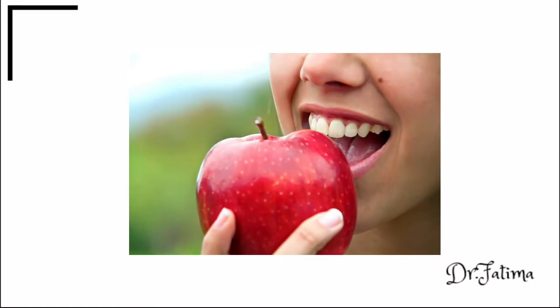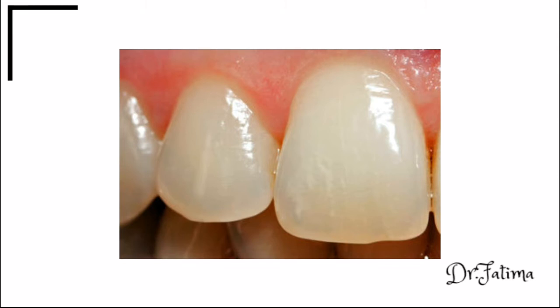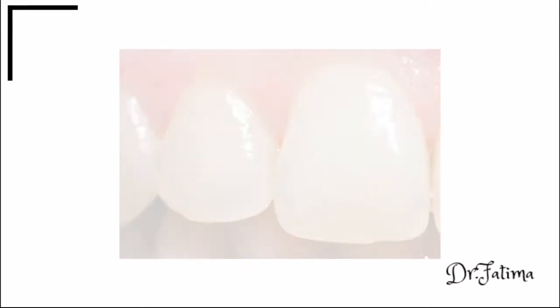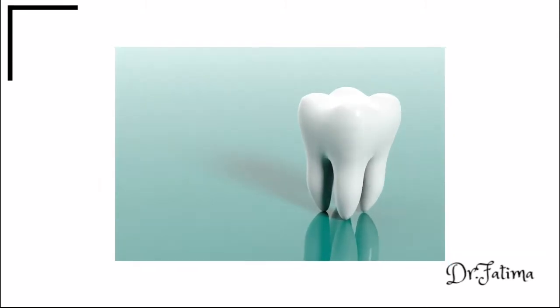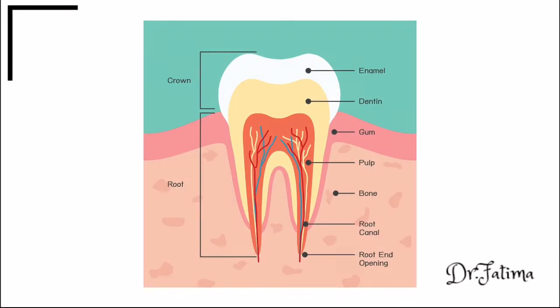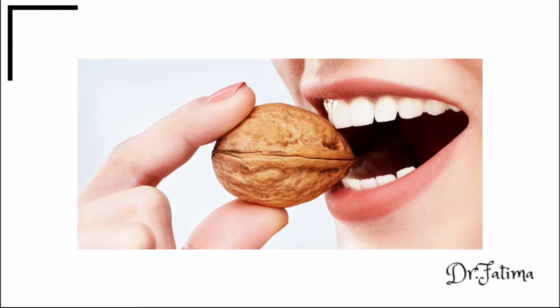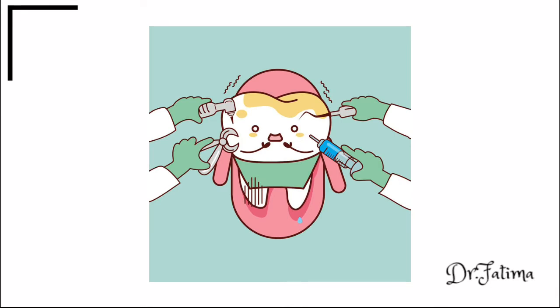Enamel can also vary in color from yellowish to grayish white, depending on variations in the thickness, quality of its mineral structure, and surface stain. Enamel has no blood or nerve supply within it. It is enamel's hardness that enables teeth to withstand heavy masticatory forces.